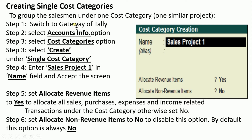To create a single cost category, go to Gateway of Tally, select Accounts Info, select Cost Category, then select Create. To group salesmen under one cost category for a similar project, we can create a cost category this way.